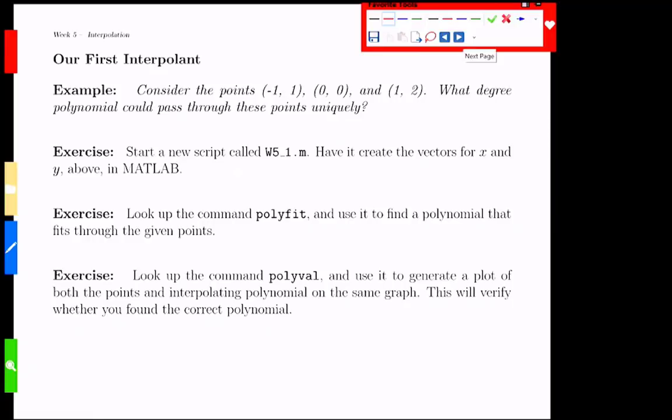Let's explore what we can do with this. We're going to go to MATLAB and start with polynomials. We're going to take three points, and this is a quick sketch. Those three points are negative 1, 1, 0, 0, and 1, 2. So we've got three points.